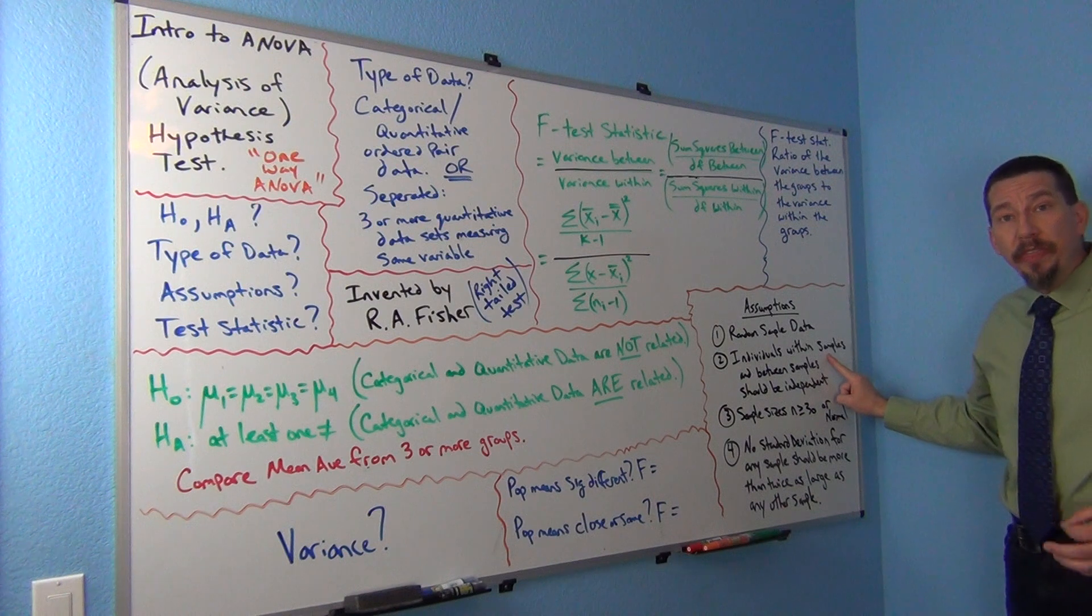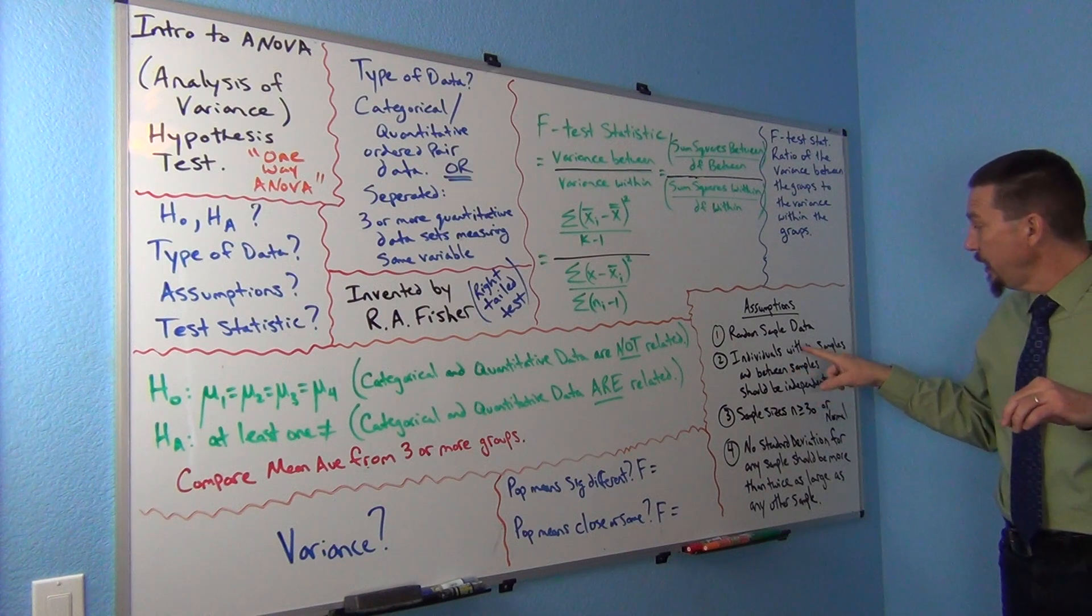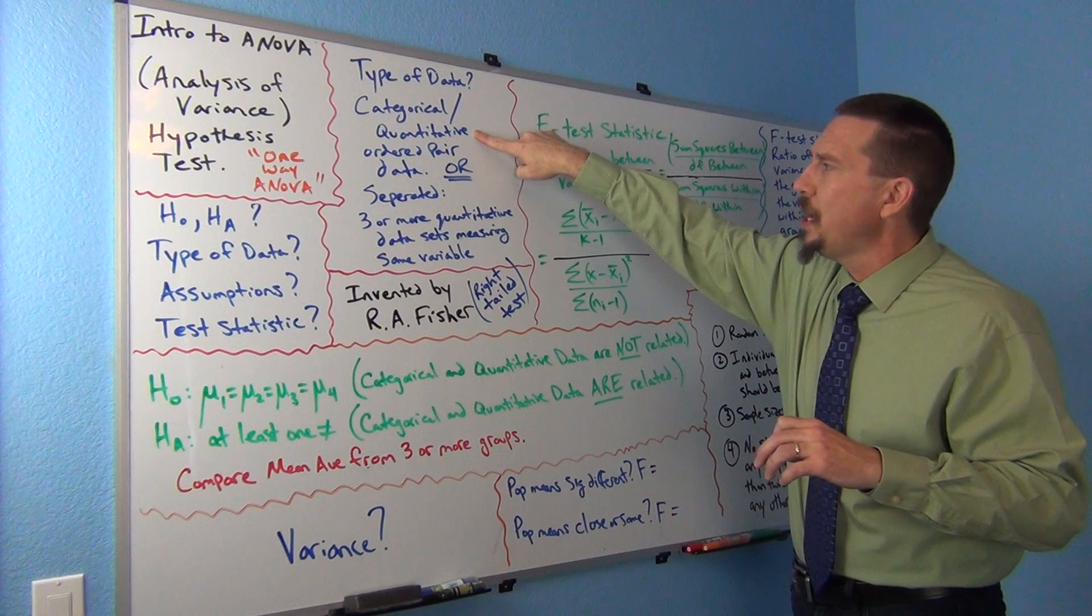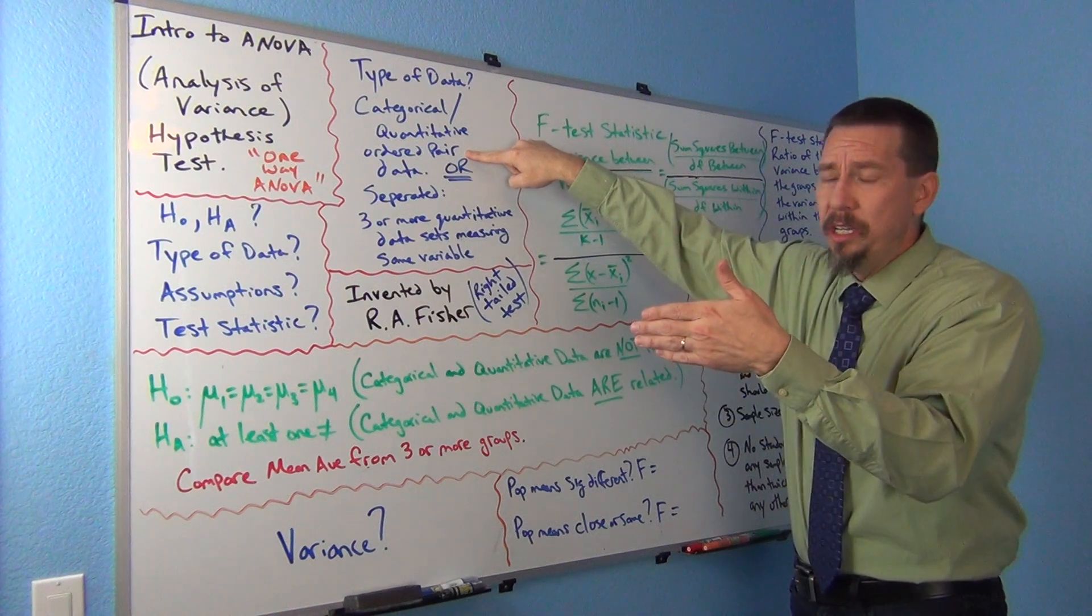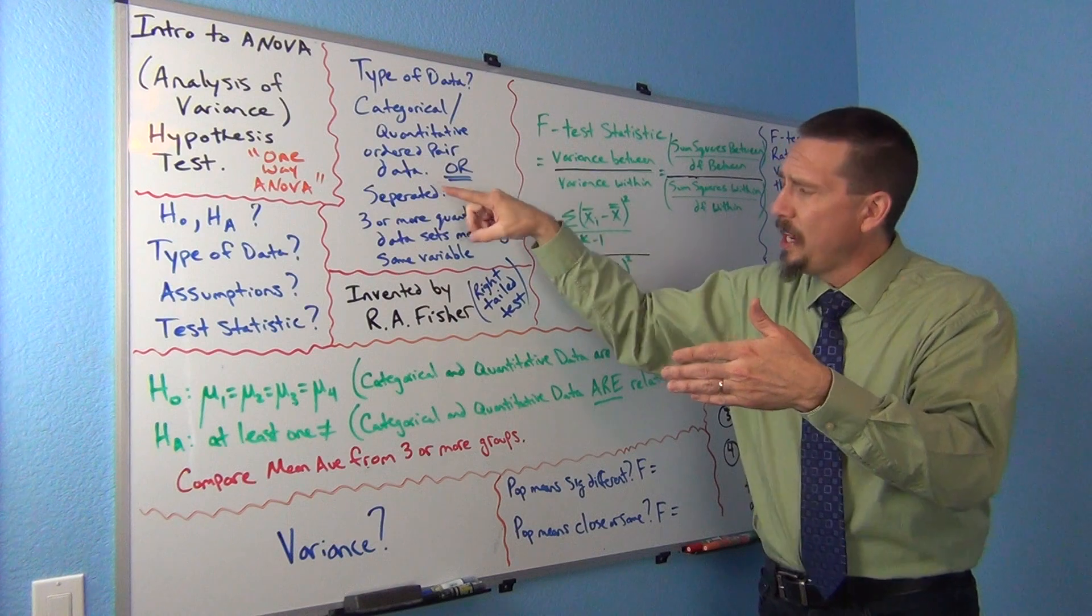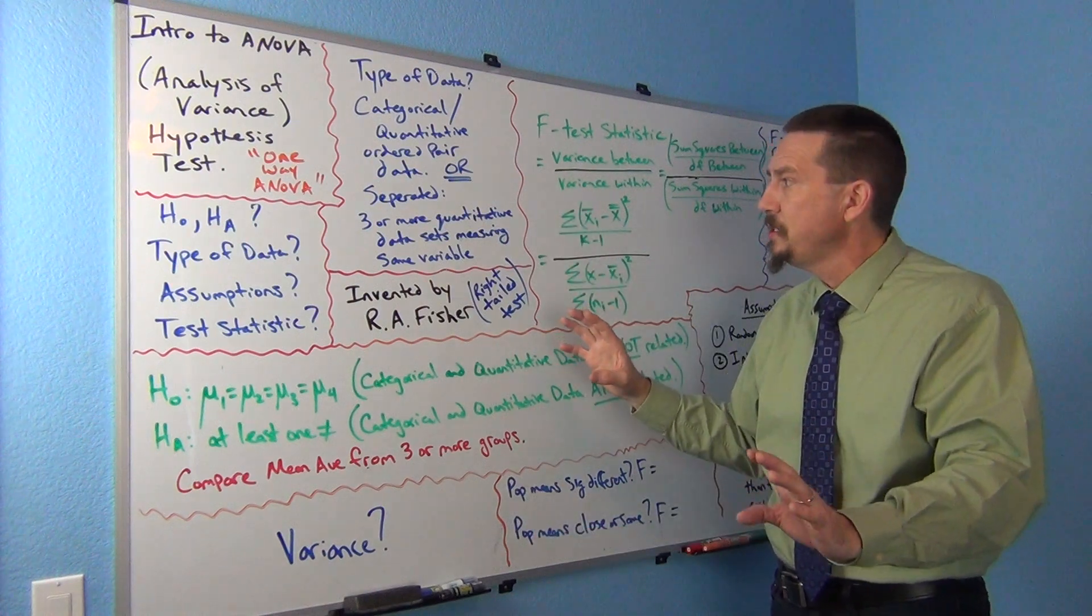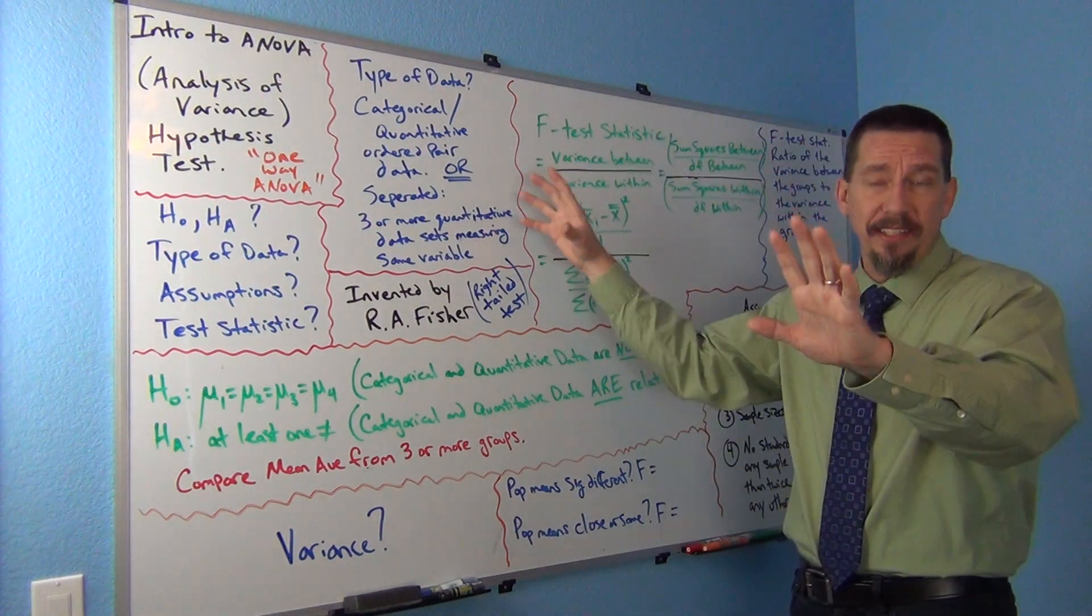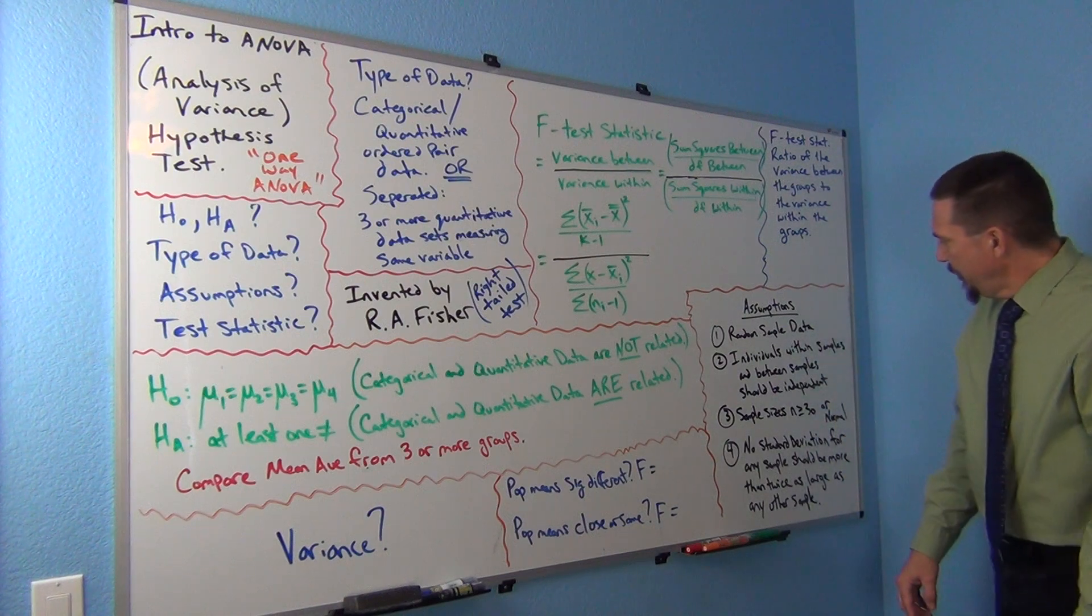I want individuals within the samples and between the samples to be independent of each other. So notice we are saying individuals between the samples and within the samples should be independent. Now that's kind of interesting because when it's written as categorical quantitative data, usually it's ordered pair. The categorical quantitative data sets might come from the same person. So they're not independent of each other, but that's not what they're talking about. They're talking about when you separate it out, if you separate it out and I have all these salaries from people from the U.S. and salaries from people from France and salaries from people from Canada and all these other countries, I shouldn't have people that are related inside each data set within. And I shouldn't have people that are related between the data sets. Basically all the individuals should not be related to each other.